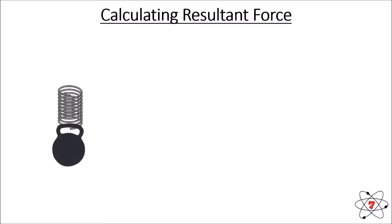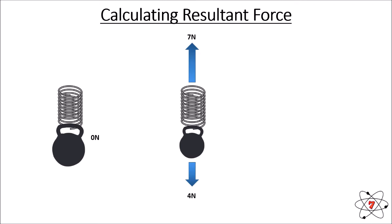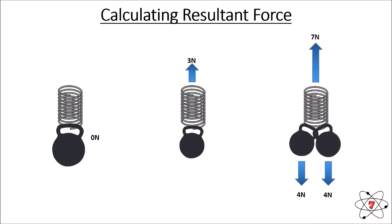Let's look at a slightly more complex example of calculating resultant force — a mass on a spring. The downward force is 7 newtons, the upward force is 7 newtons, so the resultant force is 0 newtons — 7 minus 7 is 0. If we have a smaller mass, the downward force is 4 newtons and the upward force is 7 newtons, giving a resultant force upwards of 3 newtons. If we put two masses on a spring, we have two downward forces of 4 newtons and one upward force of 7 newtons. The two downward forces add together: 4 plus 4 is 8 newtons, minus 7 newtons, giving a resultant force downwards of 1 newton.